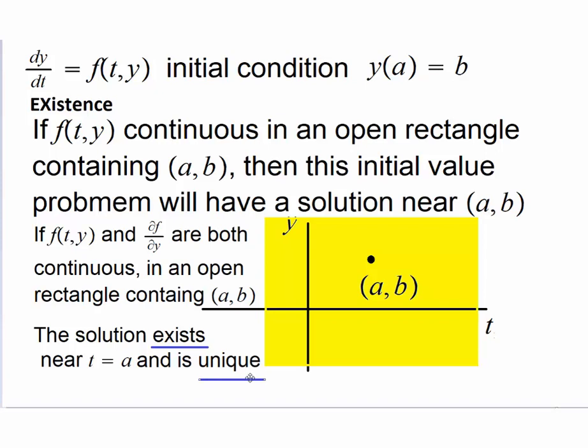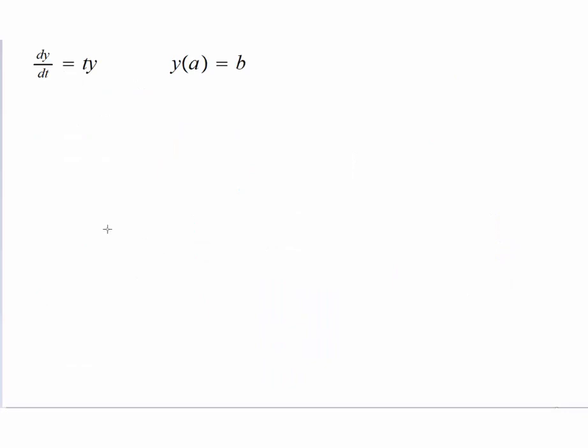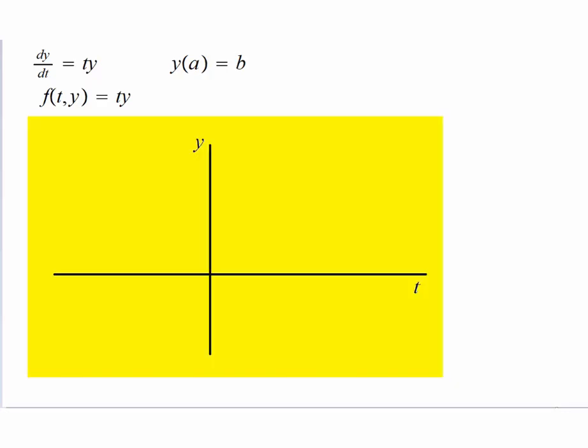So let's take up an example. Say we have this differential equation dy/dt equals ty and y(a) = b. Then so here our f is ty, and this is a polynomial function. It is continuous on the entire plane, so therefore a solution will exist no matter where the point giving the initial condition is.